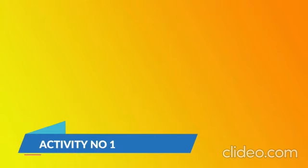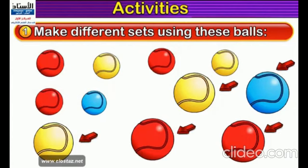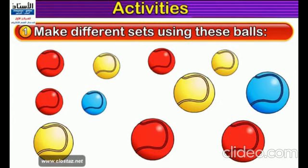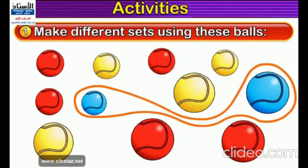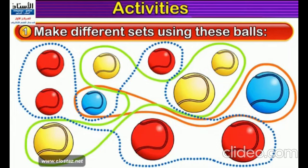We have Activity Number 1: make different sets using these balls. Students, can you see that we have red balls, blue balls, and yellow balls? You can also see big balls and small balls in this picture. I will put all the balls of the same color on one side. It means we can put the two blue balls together, then all the yellow balls on one side, and all the red balls on another side. In this way we have made three different sets of balls.